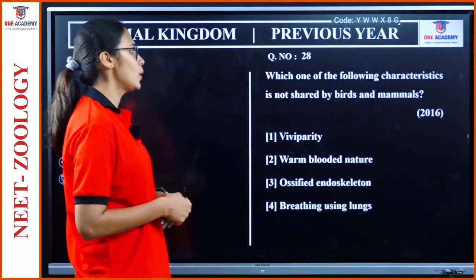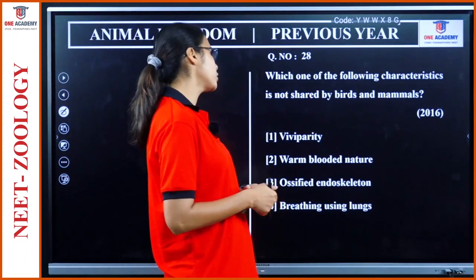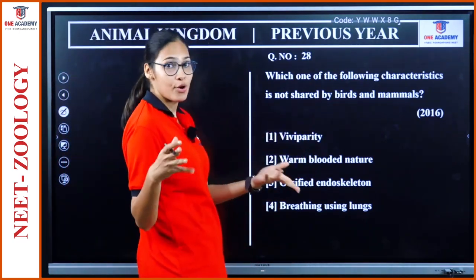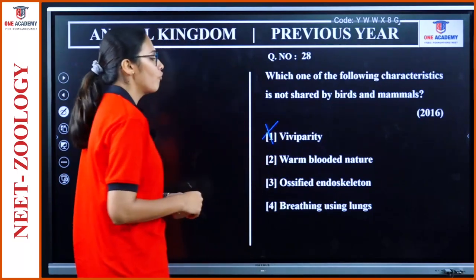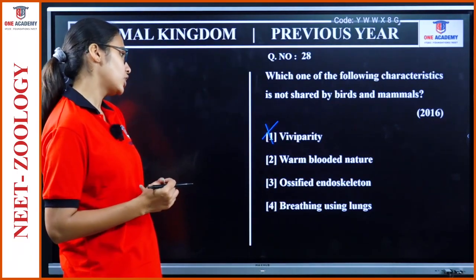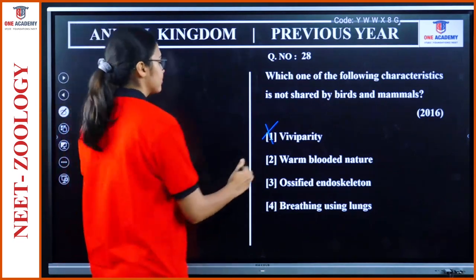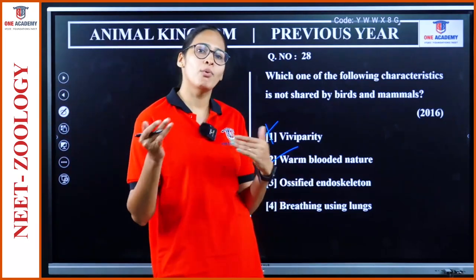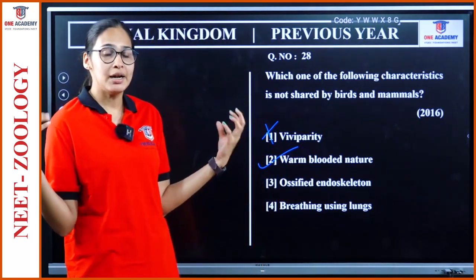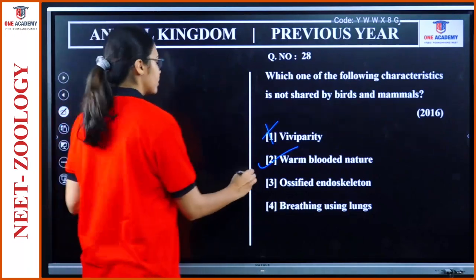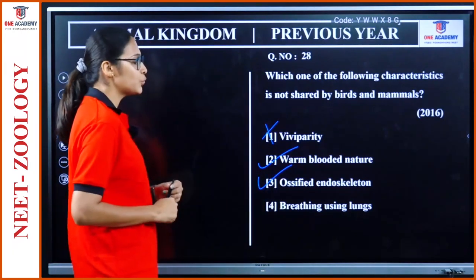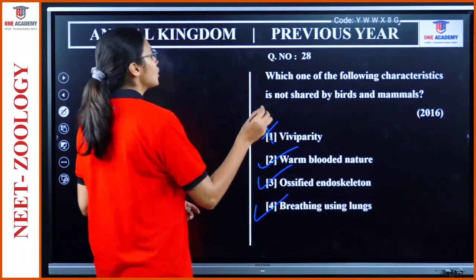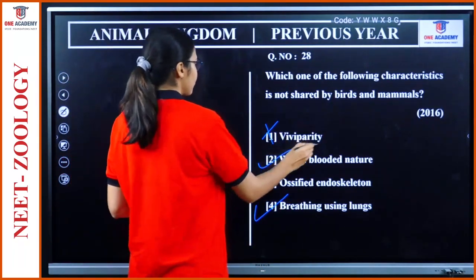Question 28: 'Which characteristic is not shared by birds and mammals?' Viviparity — birds are not viviparous, so this cannot be shared. Warm-blooded nature — both share this. Endoskeleton made of bones — both share this. Breathing using lungs — both share this. The answer is viviparity — it is not shared by birds and mammals.